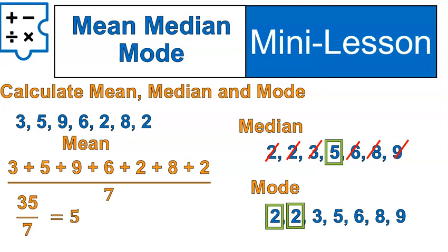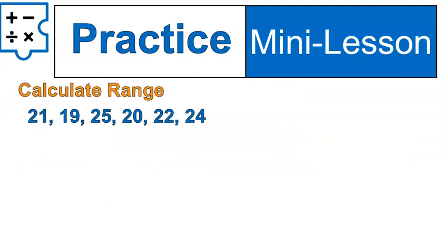So that was finding or practicing finding mean, median, and mode. I think I had my animations backwards on that, on the lists. So you might've been given that original list in this order, 3, 5, 9, 6, 2, 8, 2, and you had to put it in order to find the median. So that was kind of weird. Anyway, now we're going to practice finding the range. Go ahead and try that one more time.